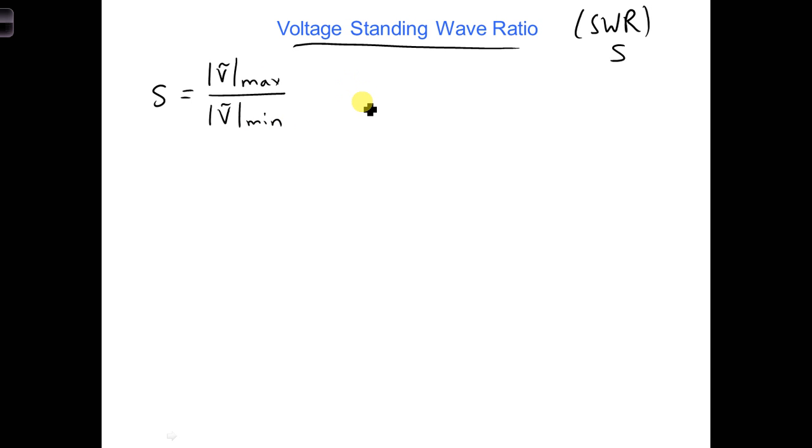And this is dimensionless, there's no units for it. The VSWR is a measure of how efficiently radio frequency power is delivered to a load on a transmission line.